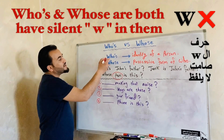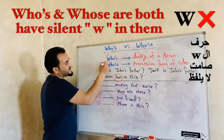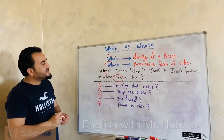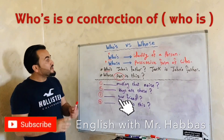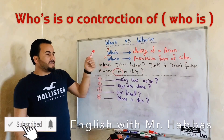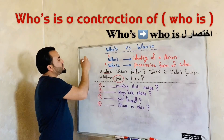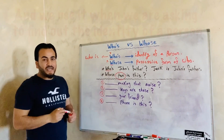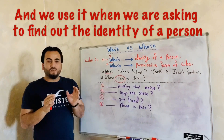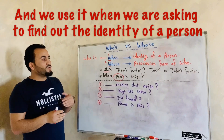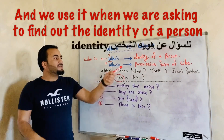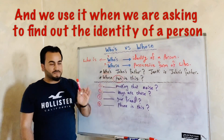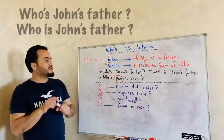This letter is silent — who's, whose. Who's is a contraction of who is. And we use it when we are asking to find out the identity of the person or people. Let me give you an example.